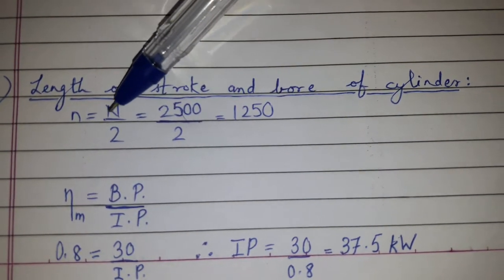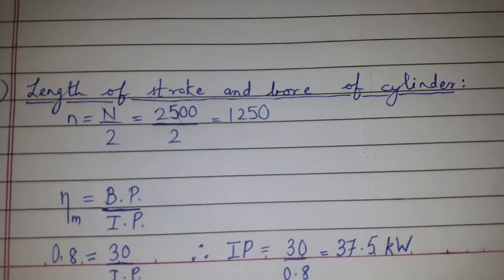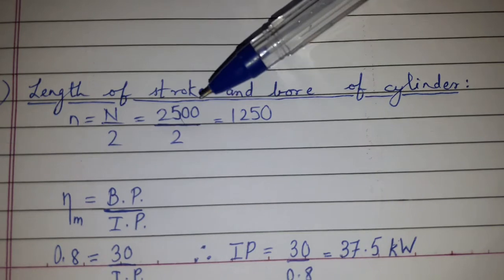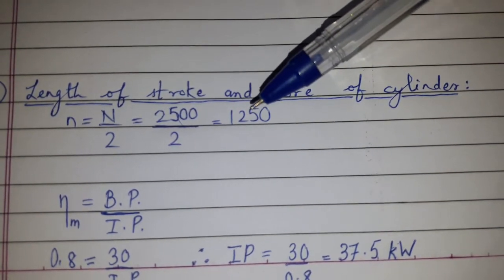So small n equals capital N divided by 2, because four-stroke petrol engine is given. That's why 2500 divided by 2, that is small n is 1250.